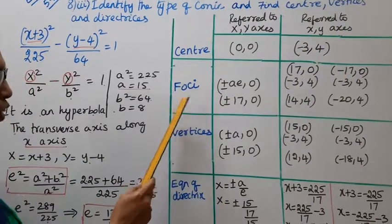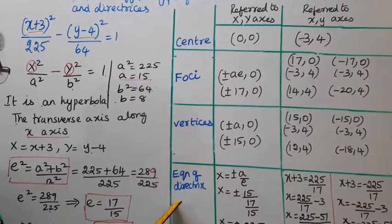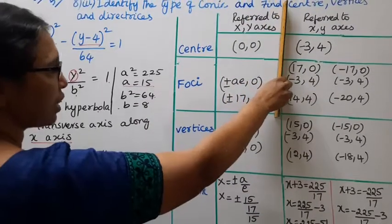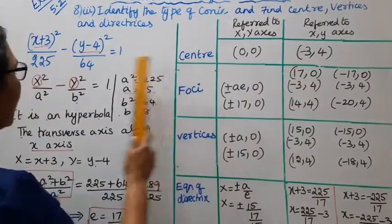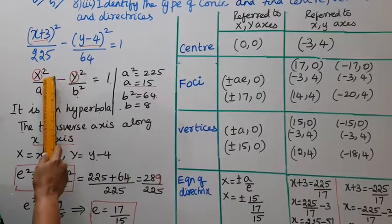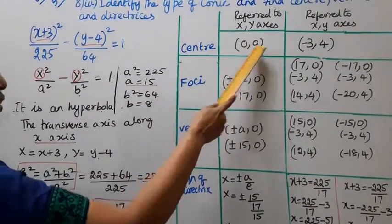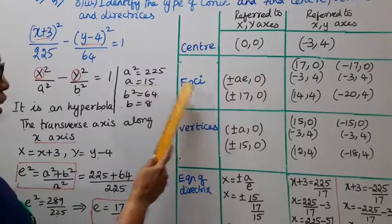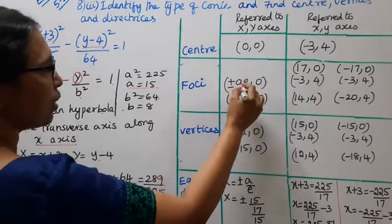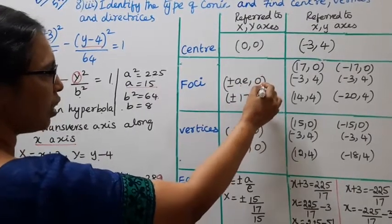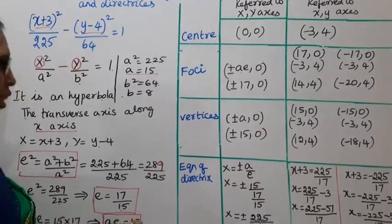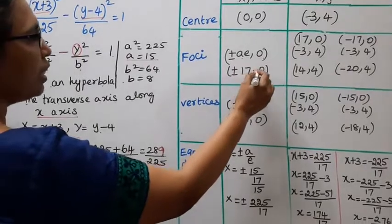To find the center, vertices, and equation of directrices: In capital X, Y coordinates, for x²/a² minus y²/b² = 1, the center is at (0, 0). Since the transverse axis is along the x-axis, the foci are at (±ae, 0), which gives (±17, 0).